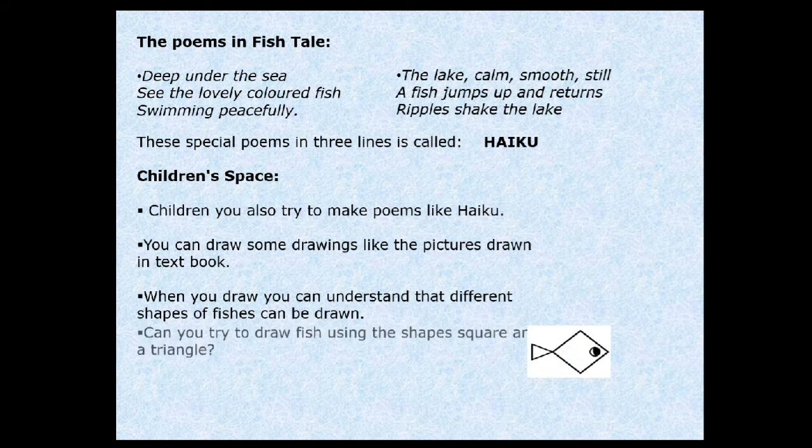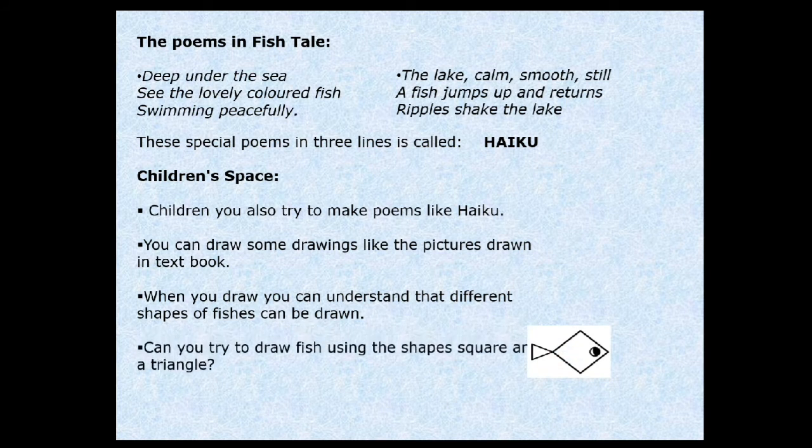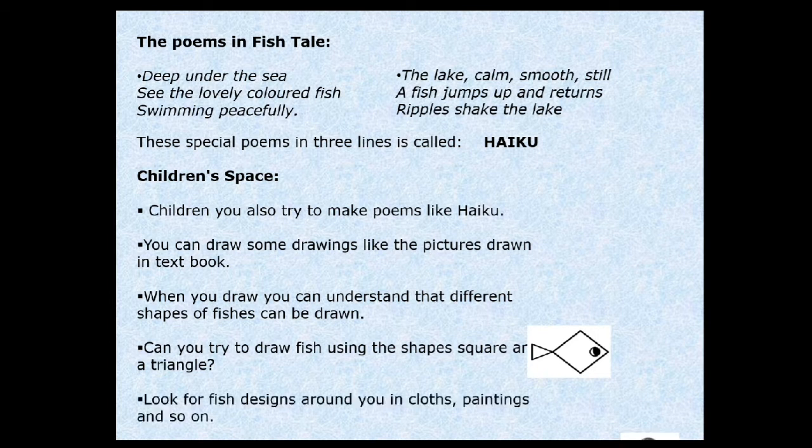For example, see the image which is given on the right-hand side. That image is made of a square and a triangle, and in between, the eye is made of a circle.